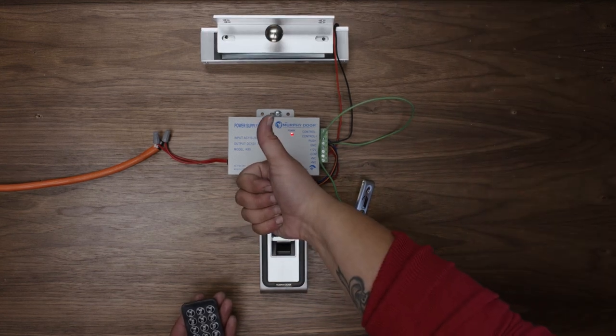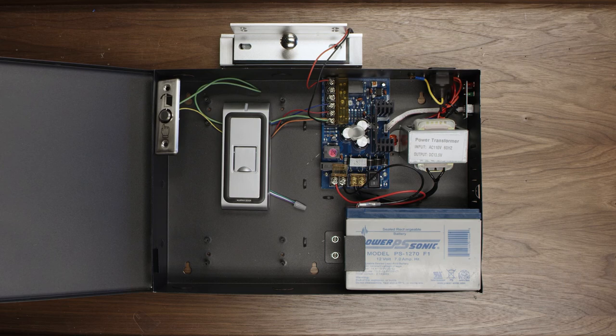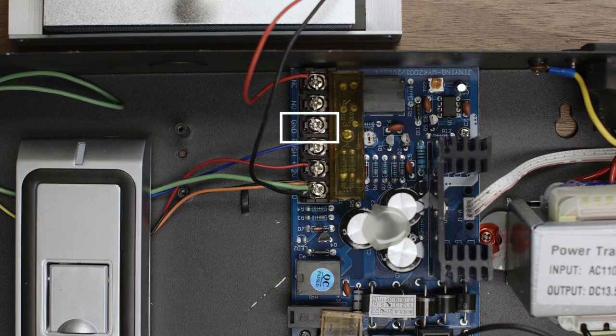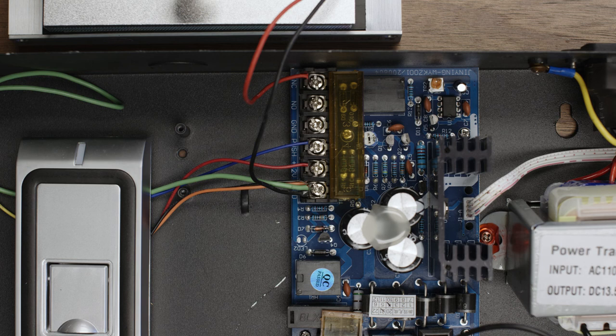If you have a battery backup, you can still follow these instructions, but the terminals on the backup are labeled a little differently. Instead of the common terminal, there's another ground, and all of the other terminals are the same, but they are positioned in a different order. Pay close attention to the terminal labels to make sure you're connecting the correct wires.